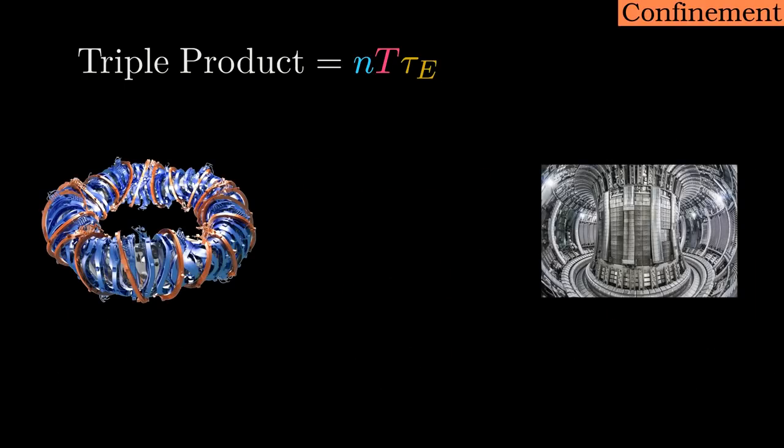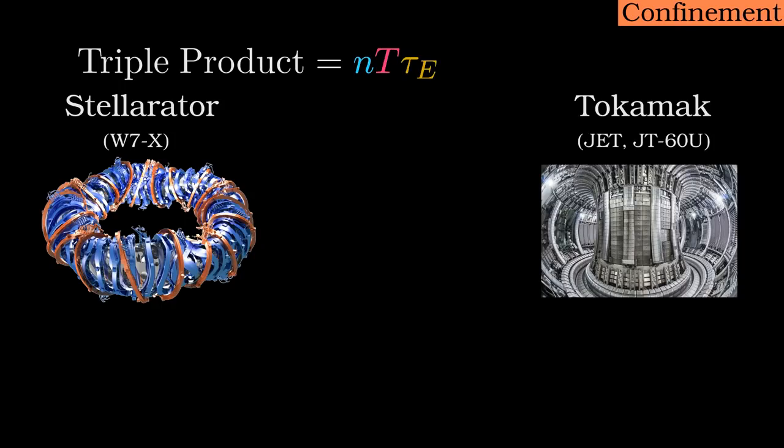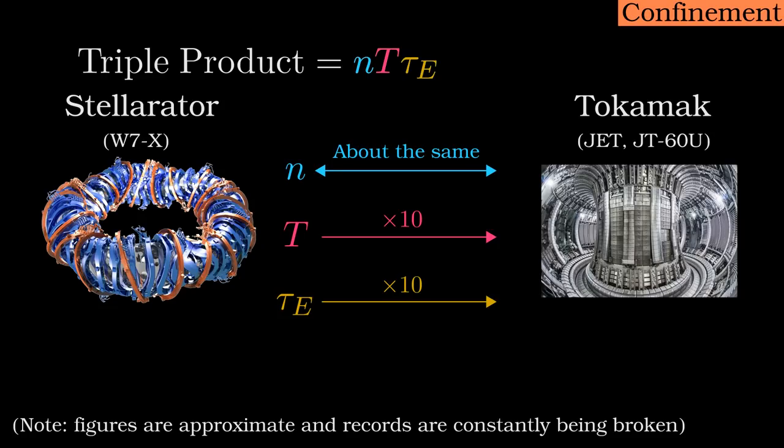For example, comparing two types of magnetic confinement devices, the best triple product achieved by a tokamak is 100 times higher than a stellarator. While this does not mean that tokamaks are strictly 100 times better than stellarators, they are superior for the moment.